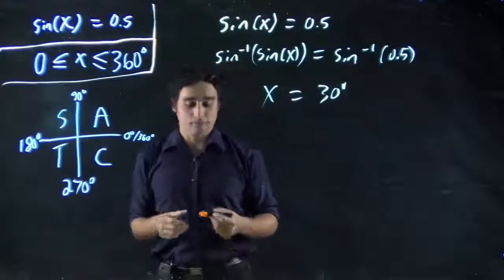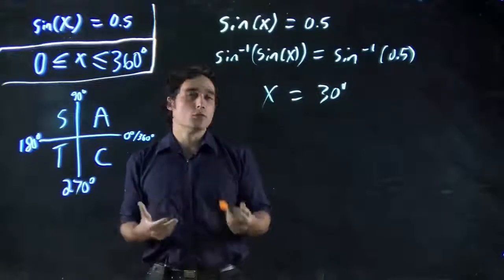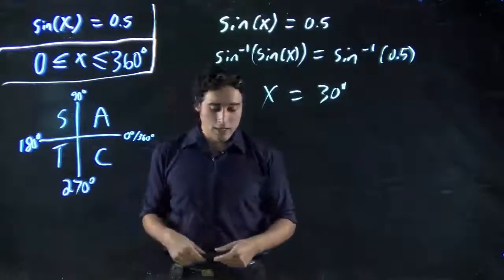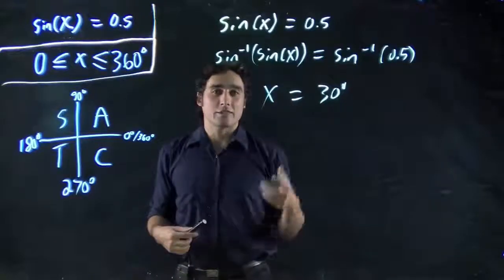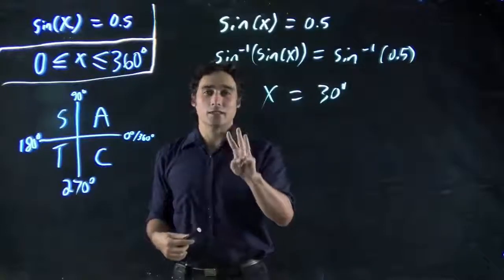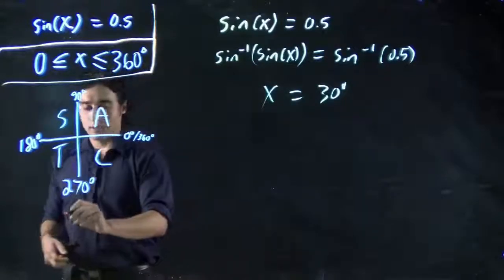How do we do that? Well, there's another set of kind of rules or tricks you can use. Whenever you have some initial x1, some initial angle, to solve the other angle, there's three cases we consider. Three possible cases.